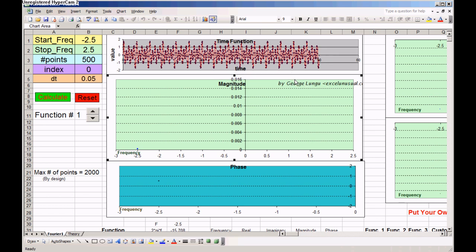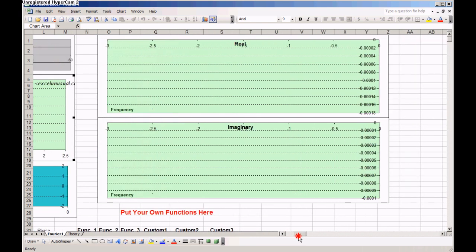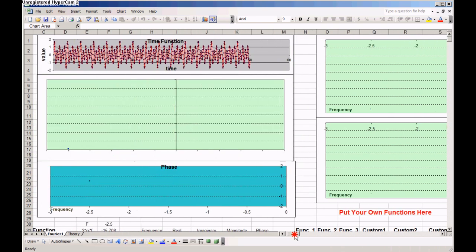The second chart contains the magnitude of a Fourier transform. The third chart contains the phase of the Fourier transform. The last two charts contain the real and imaginary parts of the Fourier transform with respect to frequency.